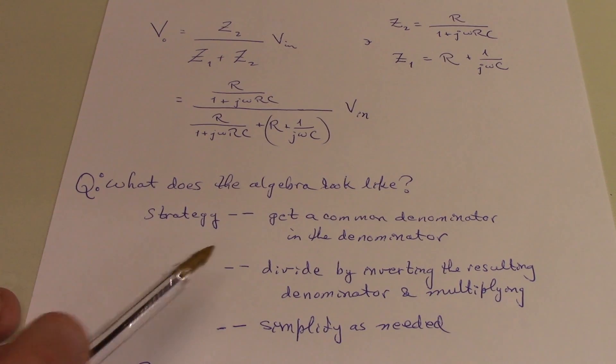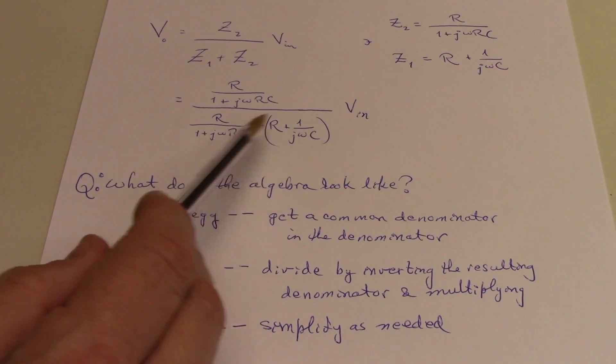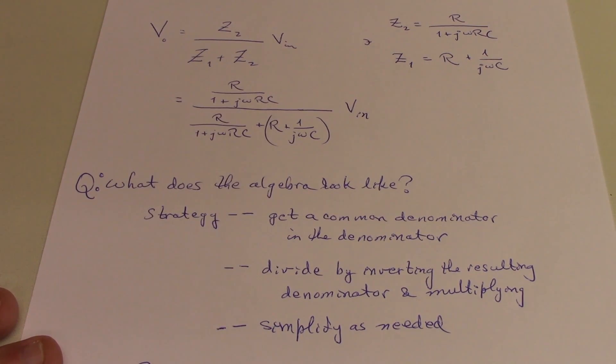So the question is, what does the algebra look like in getting to the result that I quoted? We can take a strategy that kind of has three steps to getting there.